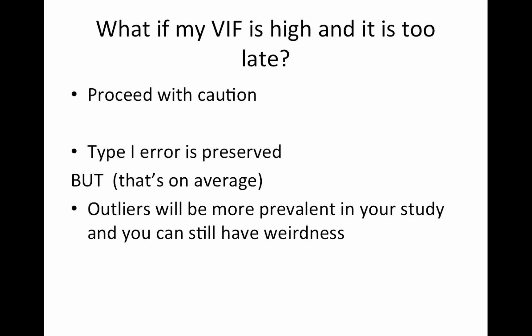Right. But your type one error is preserved, but that's on average. So as I just said, this one outlier could, or a couple of outliers can kind of ruin things. So you have to be careful. I would probably just chuck the subjects that had a really high VIF because it's a perfectly reasonable reason to remove a subject from analysis. And actually when you do have a VIF, rethink what you're doing. Do you really need these two highly collinear regressors? If they're that similar, they're probably not doing very different things.